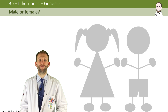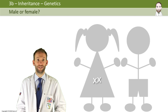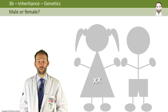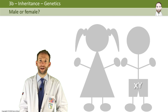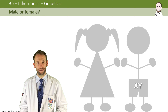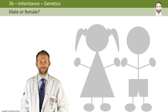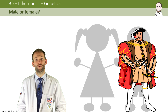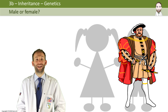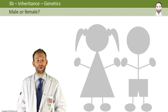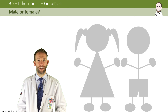Females can only pass on X's because they only have X's to give. Males have an X and a Y, so it's actually the sperm which determines whether you end up having a boy or a girl. It's always quite a nice moment of irony when you think about Henry VIII chopping off all of his wives' heads for not giving him a son, when actually it was always down to his sperm which determined whether he had a boy or a girl.